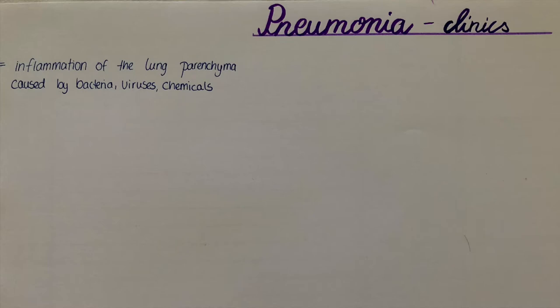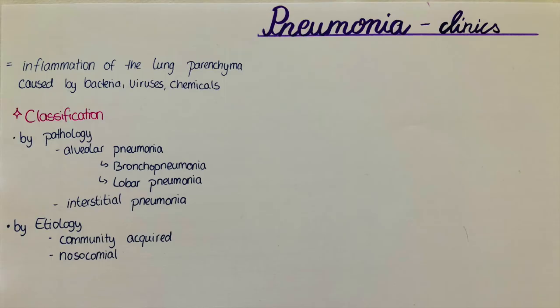First of all, what is pneumonia? It is the inflammation of the lung parenchyma, which can be caused by bacteria, viruses, fungi or different kinds of chemicals — for example, gastric acid when it is inhaled.